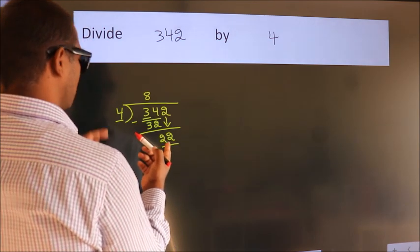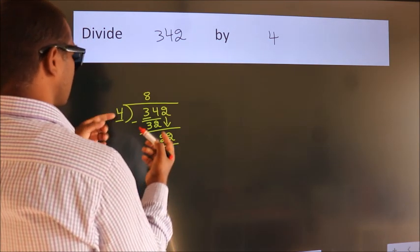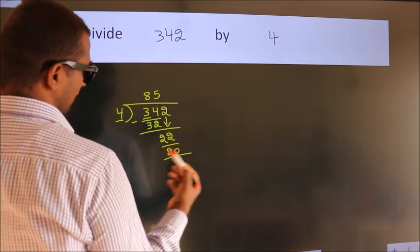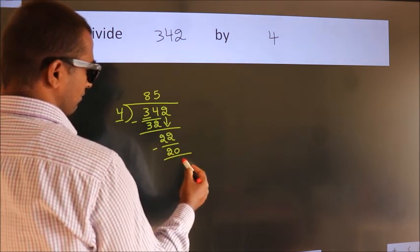A number close to 22 in the 4 table is 4 fives, 20. Now we subtract and get 2.